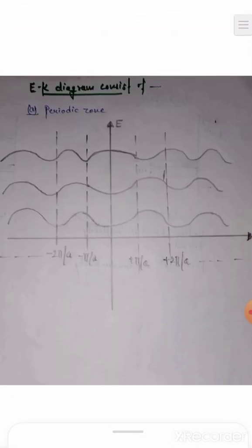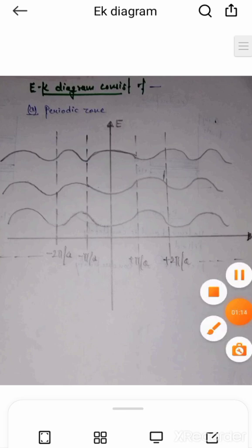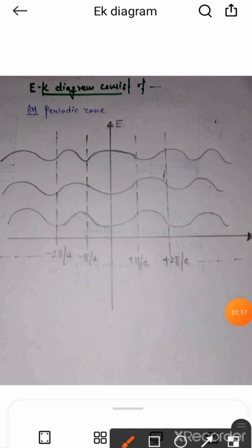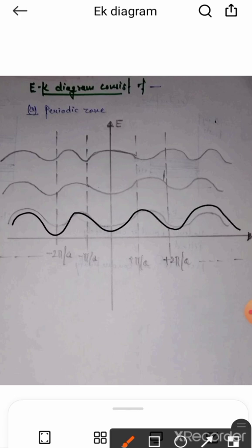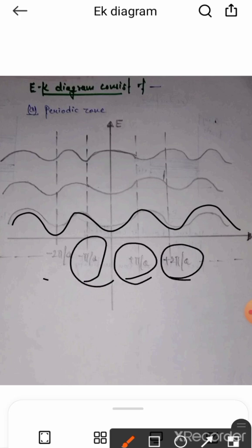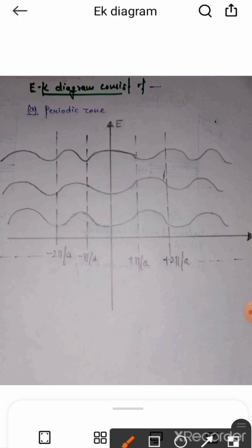The first one is the periodic zone. We know that our potential is periodic. This shows that our E-K relationship is periodic in nature with discontinuities. Discontinuities occur at ±π/a, ±2π/a, ±3π/a, and so on.